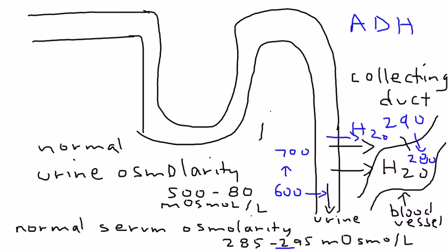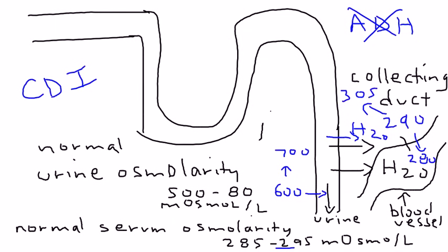Similarly, the opposite can happen if you don't have ADH — which is the condition of CDI. The serum osmolarity number goes higher because water is not coming back, so the serum is actually becoming more concentrated — this number might be around 305. And because we don't have ADH due to central diabetes insipidus, the urine will become more dilute because the water, instead of coming back, will be urinated out — so this number might go down to around 400.